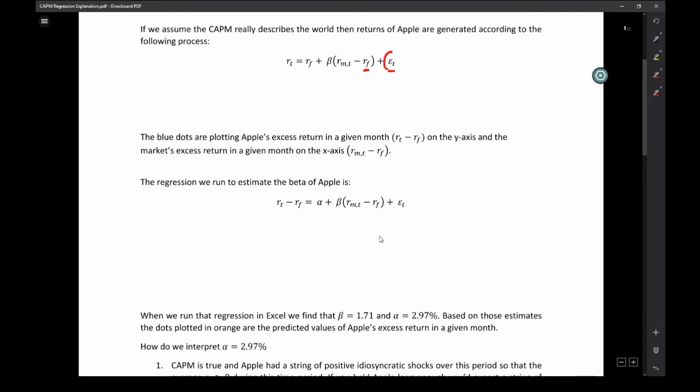This epsilon T here, that's the idiosyncratic shock in that particular month. That is a particular piece of good news or bad news. So say iPhone sales came out and they were higher than expected, that would be a good piece of news. Or perhaps a bad piece of news could be the announcement of Steve Jobs' deteriorating health. That could be a negative idiosyncratic shock. Importantly though, that idiosyncratic shock is firm specific.